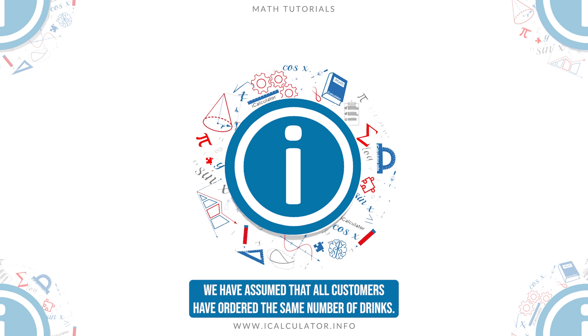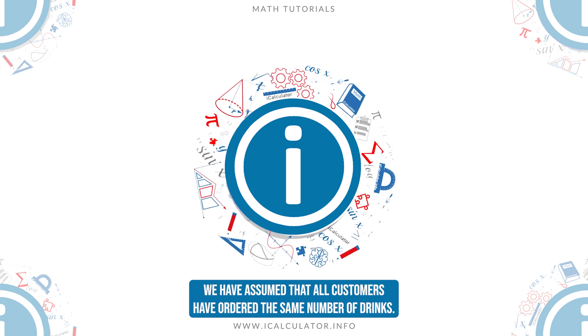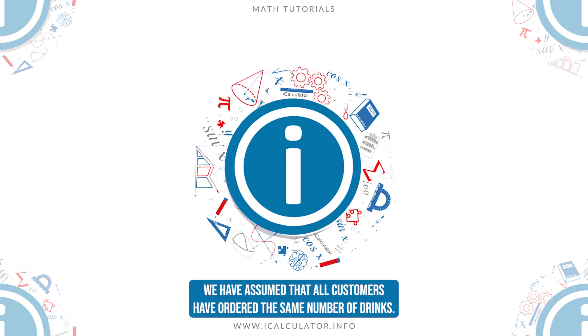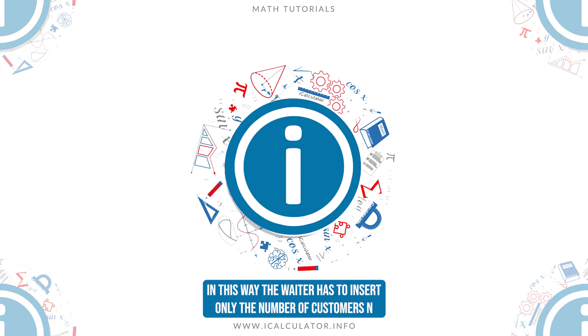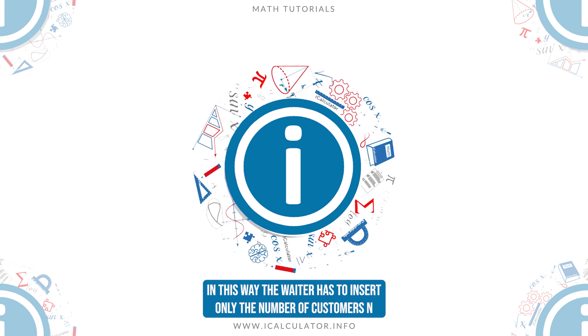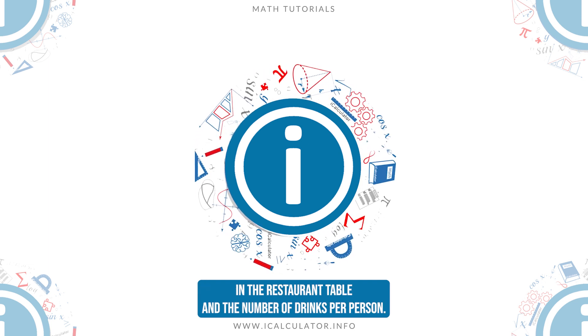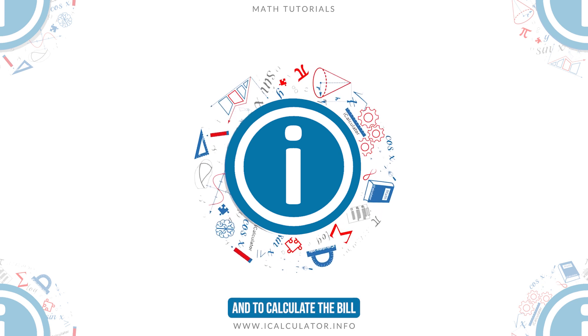In this scenario, we have assumed that all customers have ordered the same number of drinks. In this way, the waiter has to insert only the number of customers in the restaurant table and the number of drinks per person to calculate the bill.